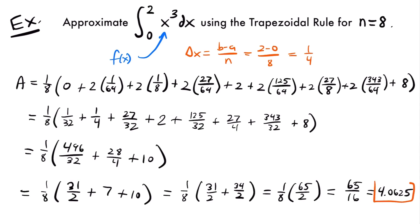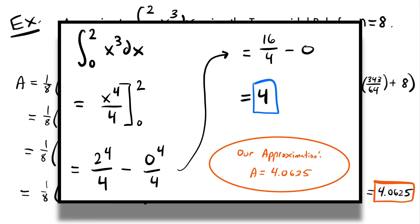So 1 eighth times 65 halves equals 65 sixteenths, which is 4.0625 in decimal form. This is our approximate area under x cubed from 0 to 2 using 8 trapezoids. If you want to see how close this is to the actual area, I'll put the work for evaluating the definite integral on the screen. As you can see, the approximation using the trapezoidal rule is pretty close to the actual area.